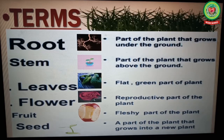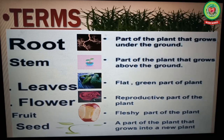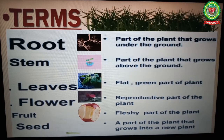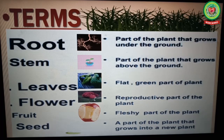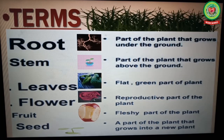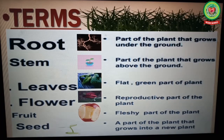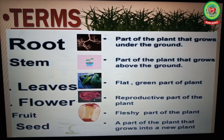Number four: flower — reproductive part of the plant. Number five: fruit — fleshy part of the plant. Number six: seed — a part of the plant that grows into a new plant.